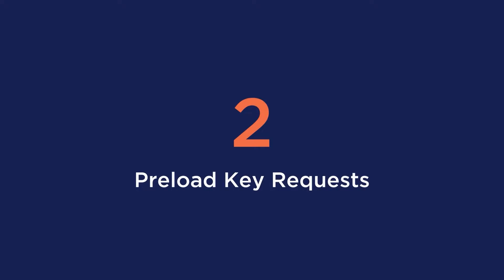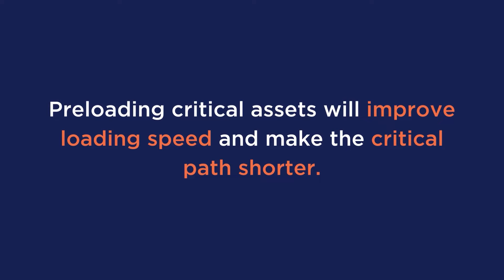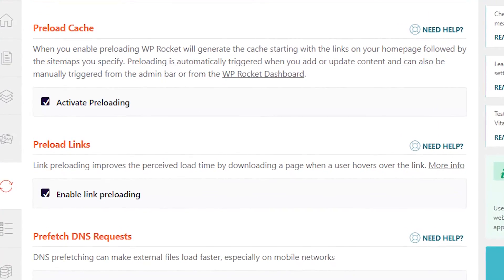Second is to preload key requests. This is another optimization technique that allows the critical resources to be preloaded. You can use this script to tell your browser which important resources will be needed for a specific page. By preloading critical assets, it will improve your loading time and make the critical path shorter. For the simplest way to preload key requests, all it takes is just the click of a button in WP Rocket.